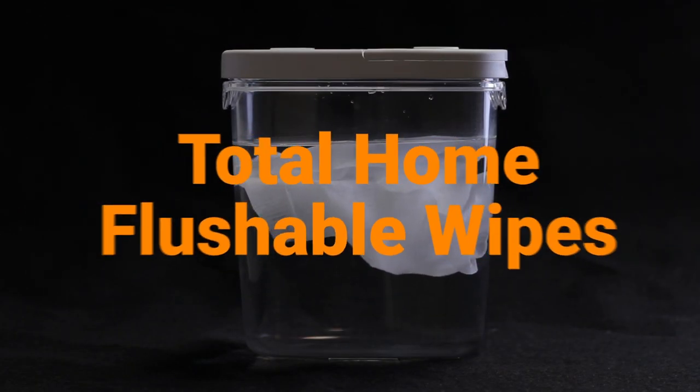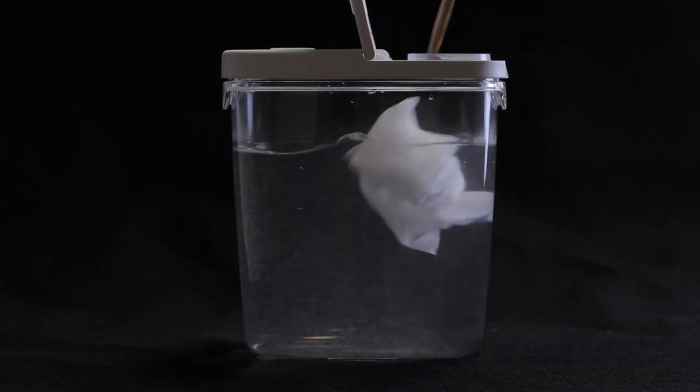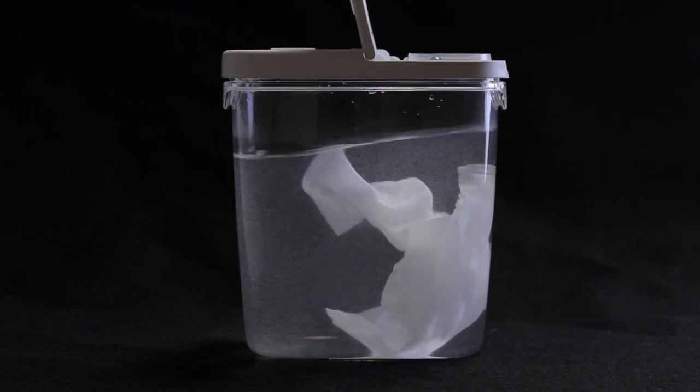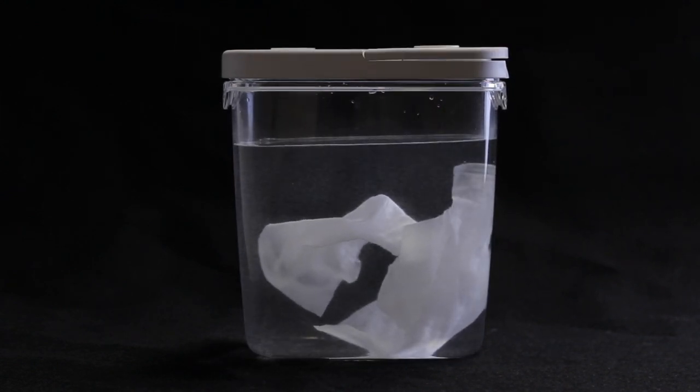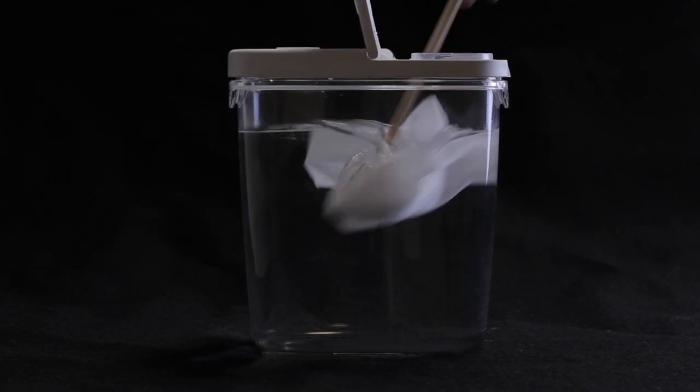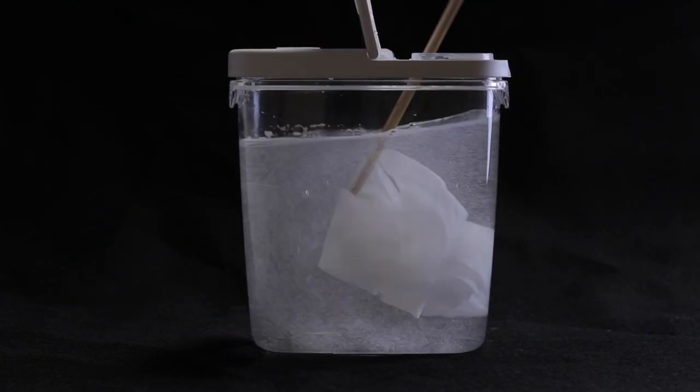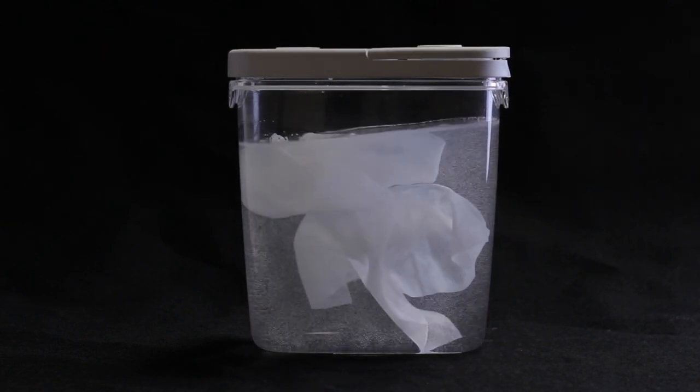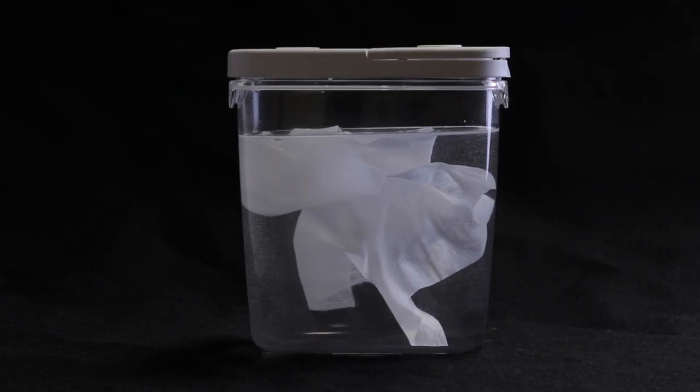I used Total Home flushable wipes to exemplify how terrible flushable wipes can be for your plumbing. They tend to be a major toilet clogger. You would have to be insane to use Lysol wipes as toilet paper, but they do get flushed down the toilet a lot and as you can see they don't break apart at all.